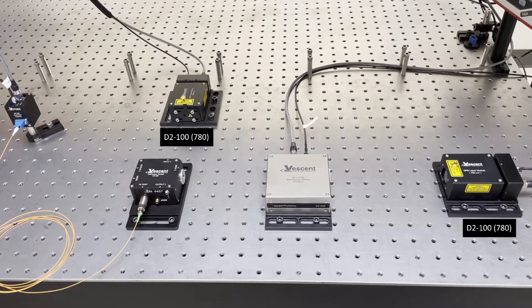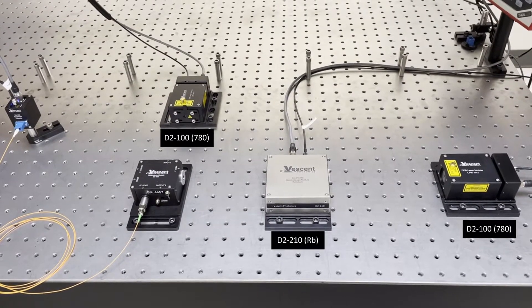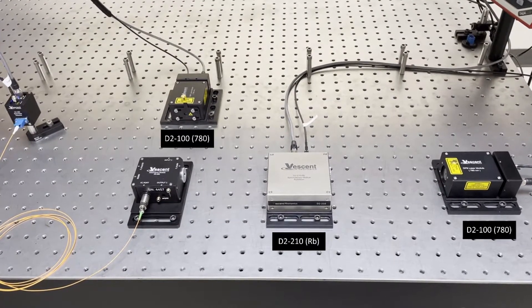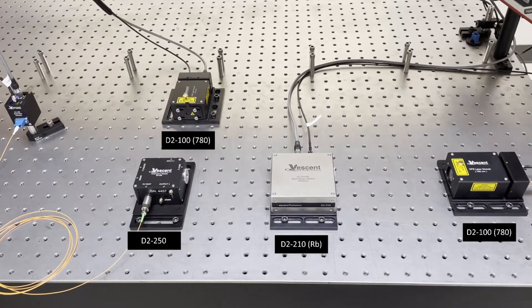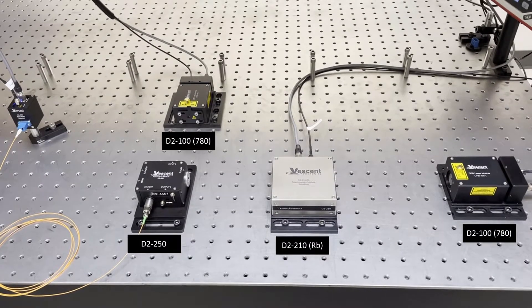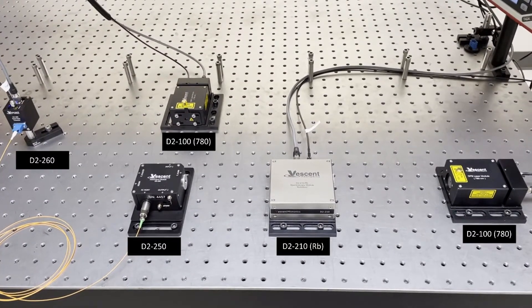The master laser on the right is going through a D2-210 spectroscopy module. We're using rubidium for this setup, and then the beats are combined in a D2-250 heterodyne module and picked up on the D2-260 beat note detector at the far left there.